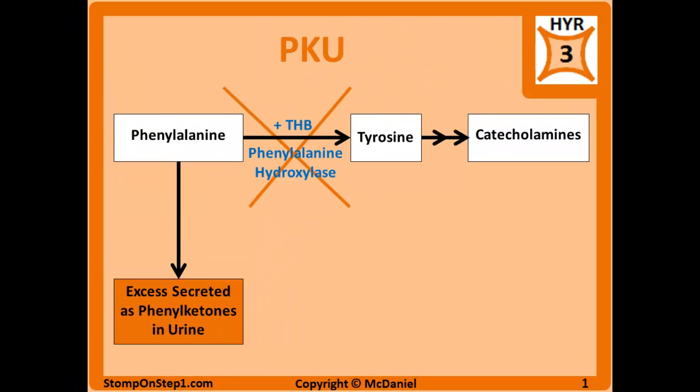PKU or phenylketonuria is just what it sounds like — having phenylketones in the urine — and it is caused by a deficiency of either phenylalanine hydroxylase, the enzyme, or a deficiency of its cofactor THB. Both deficiencies present pretty similarly because they prevent phenylalanine from being converted into tyrosine, and the lack of tyrosine causes multiple problems because tyrosine is converted to many essential things in the body. When you're not converting phenylalanine to tyrosine, it builds up and gets excreted in the urine.